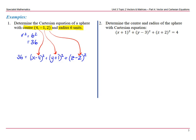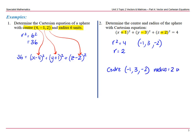Going the other way: determine the centre and radius of a sphere with the given Cartesian equation. So r squared is 4, so r has to be 2 — we only use the positive value. Then we read the coordinates as the opposite signs: negative 1, 3, negative 2. So the centre is (−1, 3, −2) and the radius is 2 units.